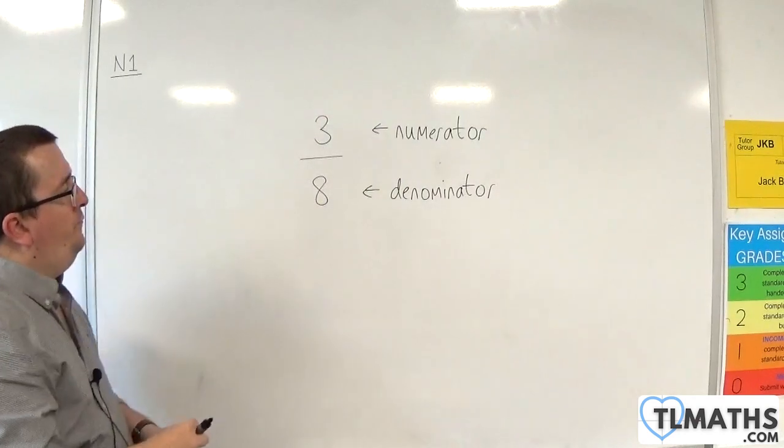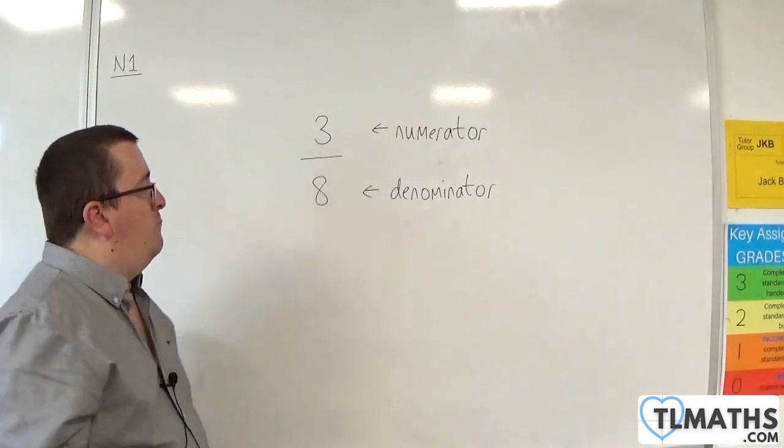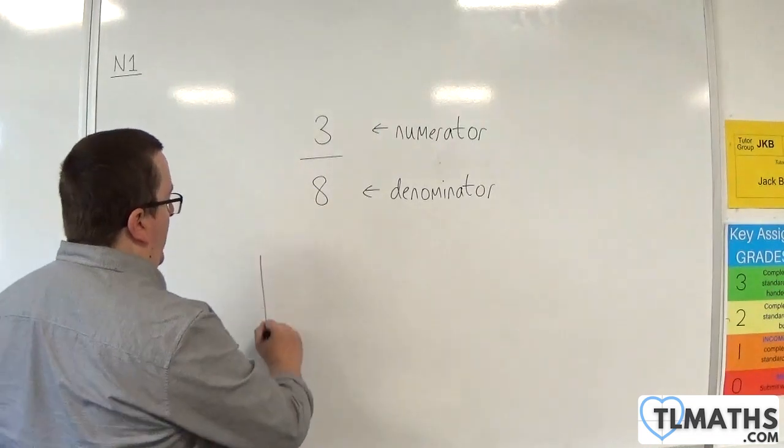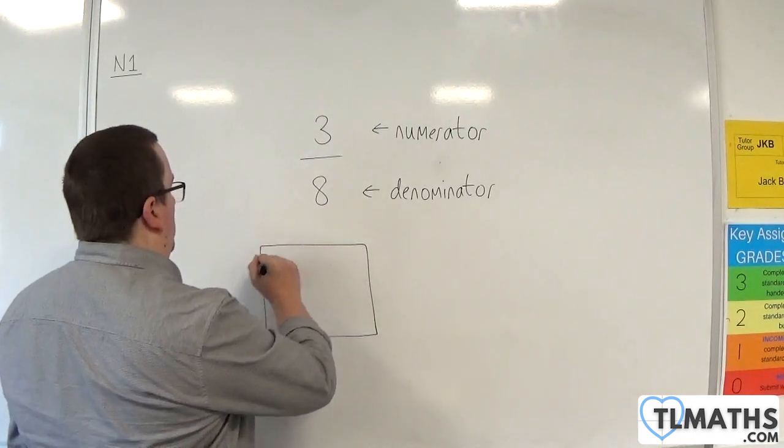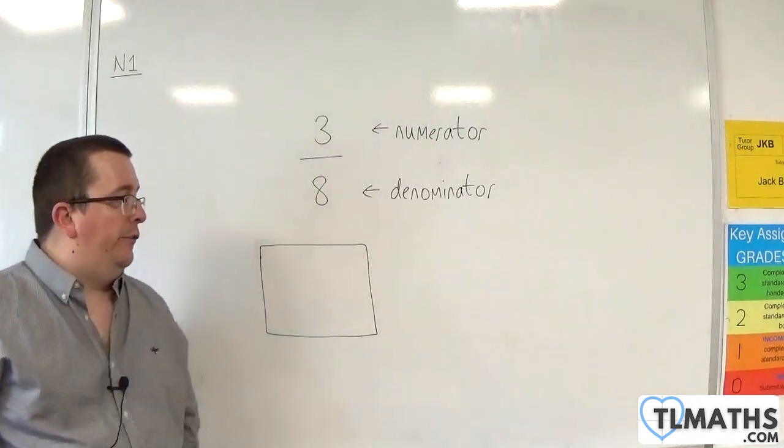Okay? Now, what does 3 eighths represent? Well, if you have a whole, so let's say 1 unit, which I'll represent by this square,